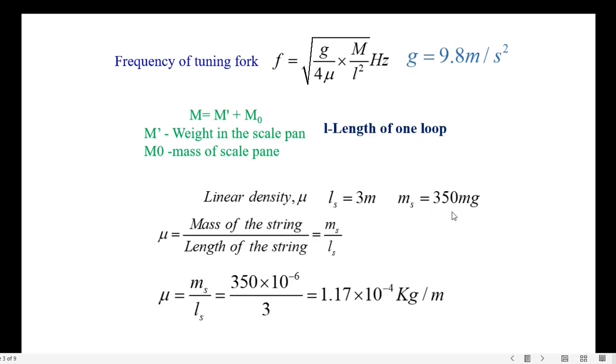In this example, the mass of the string used is 350 milligram and the length is 3 meter. Thus the mu value is 1.17 times 10 to the power negative 4 kilogram per meter.